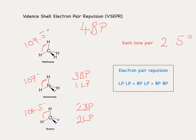The reason we get this reduction in bond angle is that electron pair repulsion is greatest for lone pair–lone pair interactions, and that repulsion is greater than the bond pair–lone pair interaction, which is greater again than the bond pair–bond pair interaction. As a note, don't use shorthand notation in examinations — make sure you use the full annotation: lone pair, lone pair repulsion greater than bond pair, lone pair, which is greater than bond pair, bond pair.